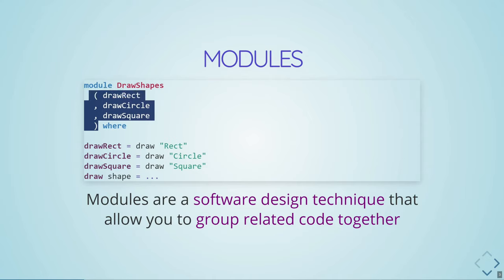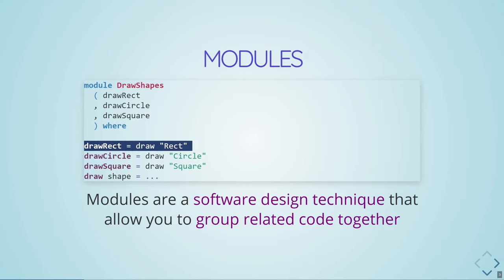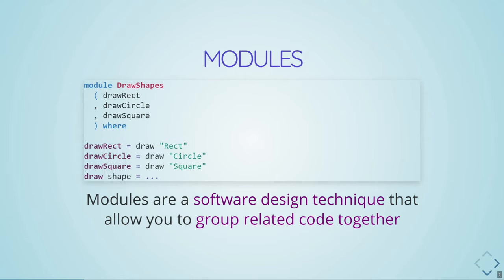You might also have some functions that are just helper functions to the code you're writing. For example, a draw function that you don't want anybody to use directly, but it's useful to the exported functions. You wouldn't specify those in the export — you would hide them away.